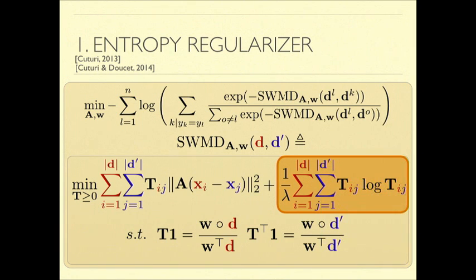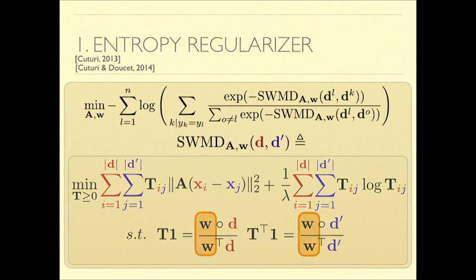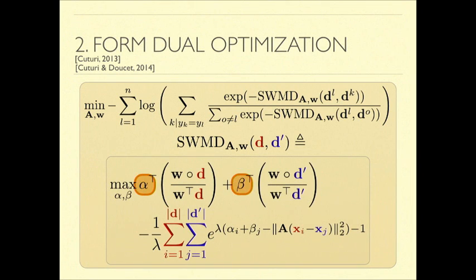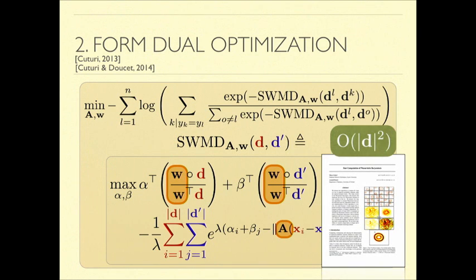So this seems really nice, but if we look again and we stare at our optimization problem, we realize that some of our variables are in the constraints. And we're really hoping to solve this with gradient based optimization. So what we'll do is we'll form the dual optimization problem. Because the nice thing about this problem is it's strongly convex. So we can form the dual and instead solve for the dual variables alpha and beta instead of the transport matrix T. And now all of our variables are in the objective. This is an unconstrained optimization problem. And so the algorithm follows very nicely. And importantly, this is still quadratic in the number of unique words.